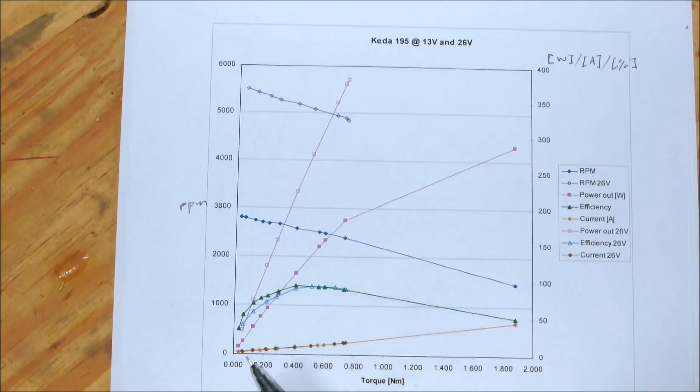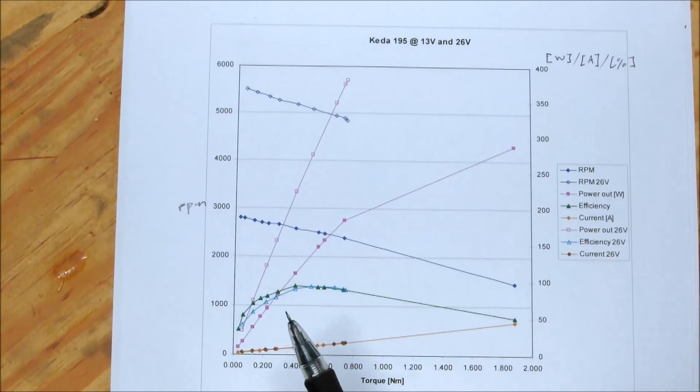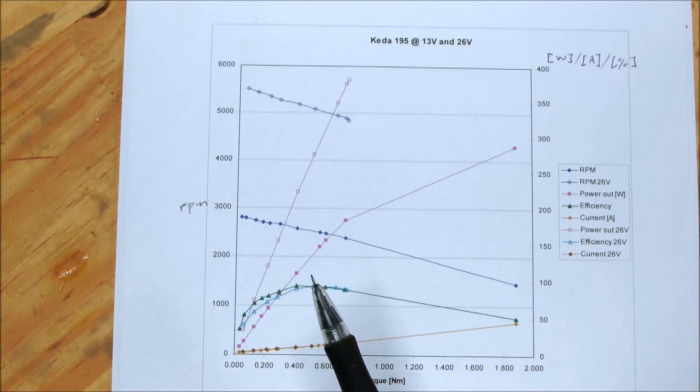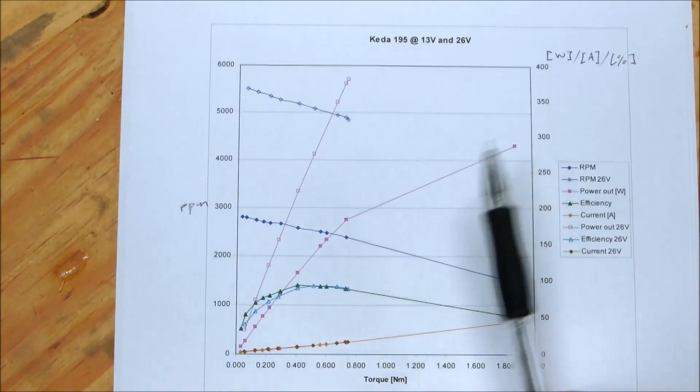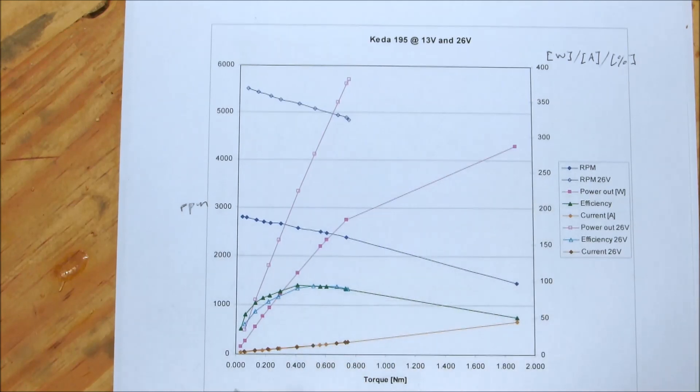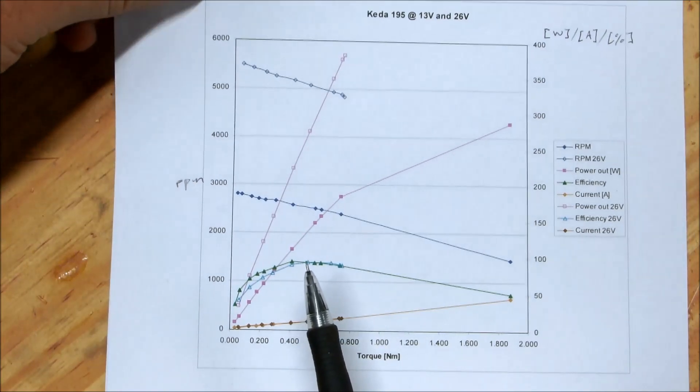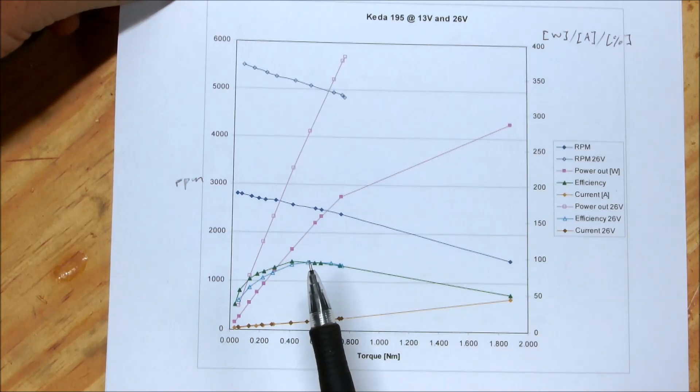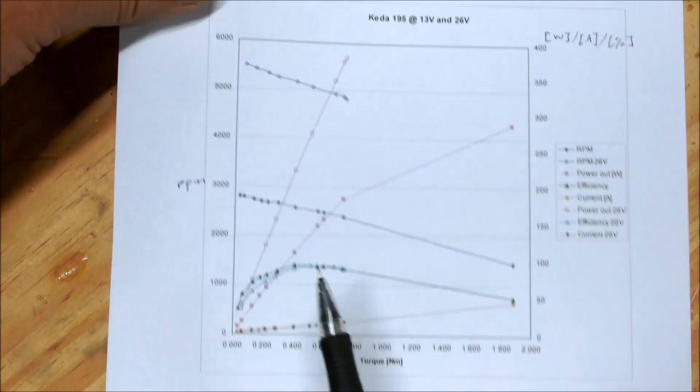To generate the different load points for each voltage curve, I simply varied the resistance on that little starter motor that I used as a generator. By adding more bulbs in parallel, the resistance drops and that increases the load, increases the torque on the generator and obviously then loads the brushless motor itself. The maximum efficiency peaked at around 90% of the no load RPM, so slightly higher fraction compared to lower efficiency brush motors.